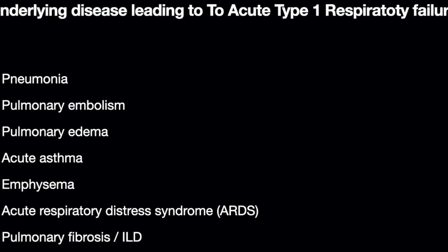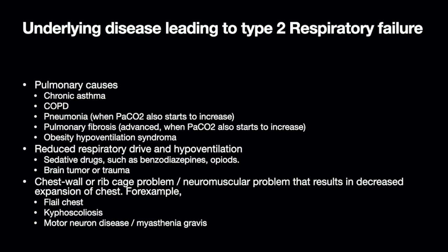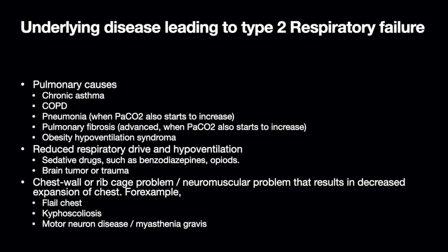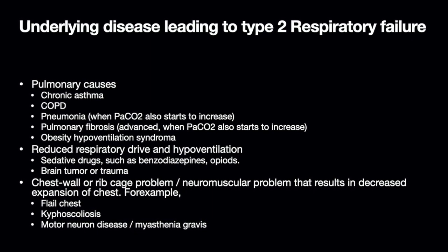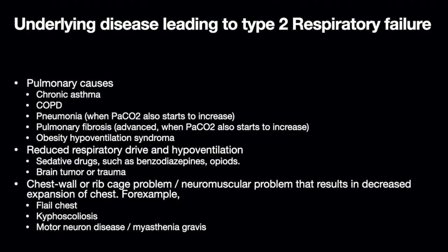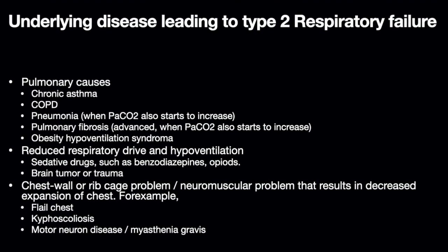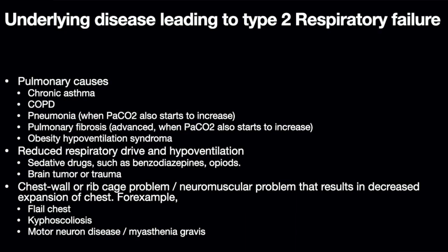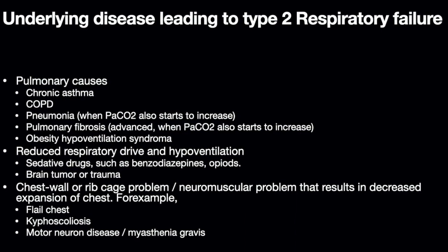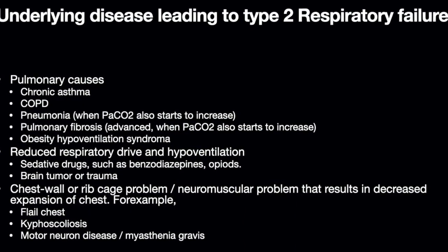It can also be as part of the COVID syndrome — you can have ARDS type 1 respiratory failure as well. With regard to impaired ventilation or type 2 respiratory failure, there are various mechanisms. It can be seen in patients with COPD, in patients with neuromuscular diseases like myasthenia gravis, motor neuron diseases, or in patients who have an impaired central respiratory drive.